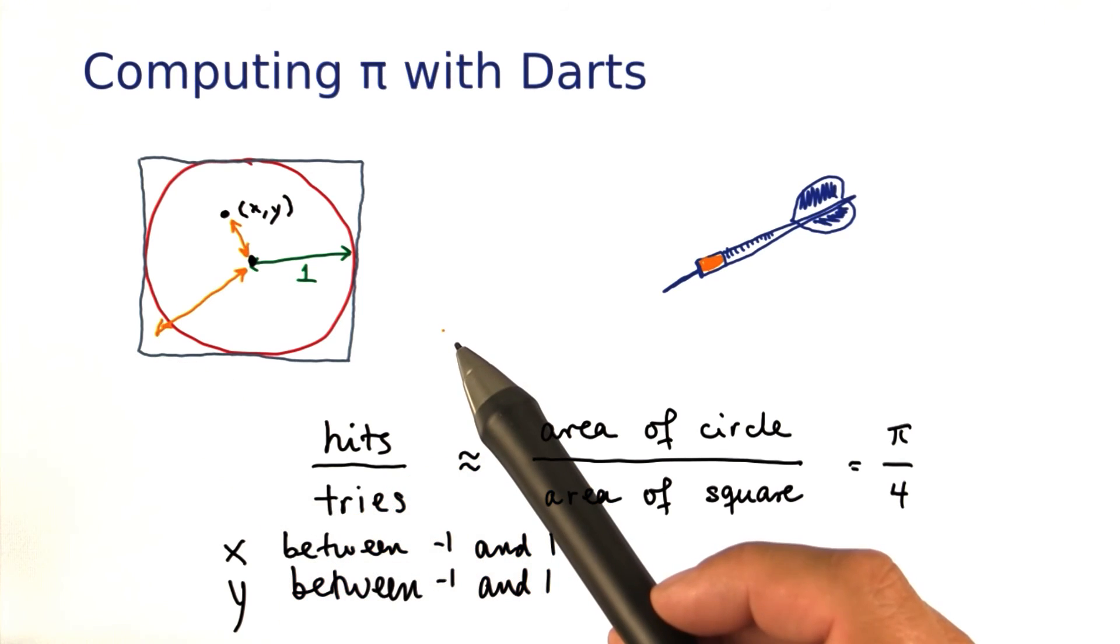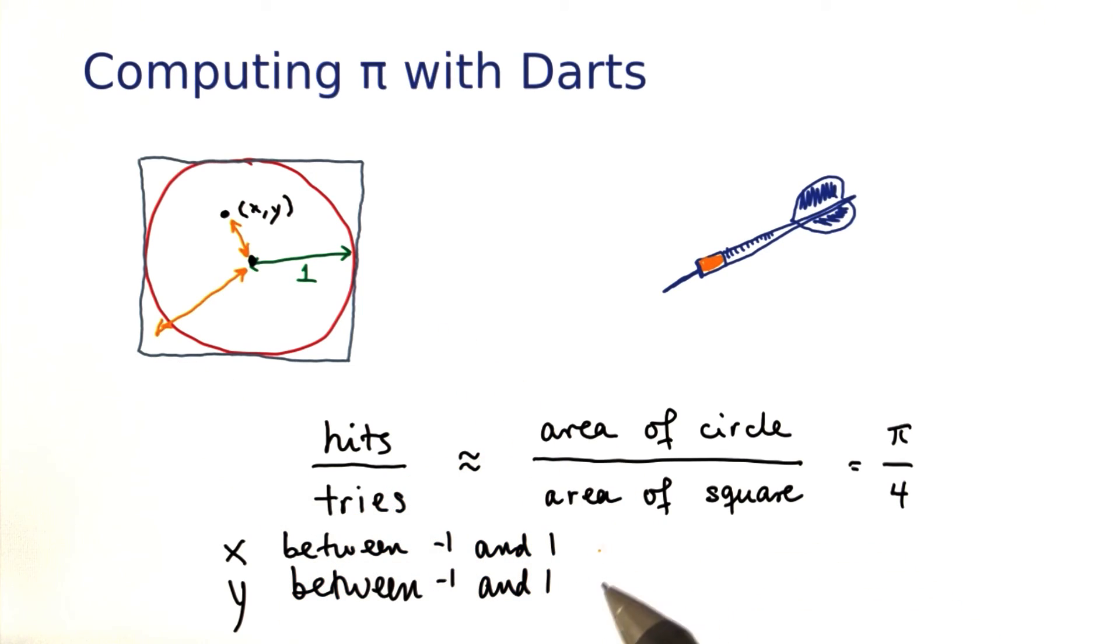Go ahead and complete the program that does this. The biggest challenge is to get the x and y to be random values between minus 1 and 1, because next double gives you values between 0 and 1. You'll need to be creative to adjust this range to the one that you want.